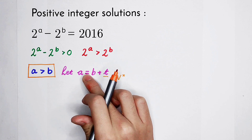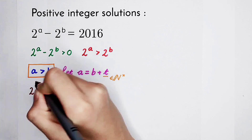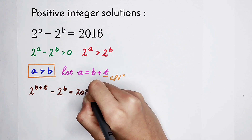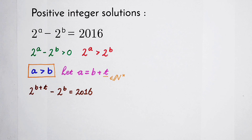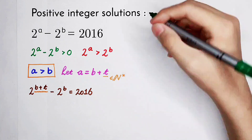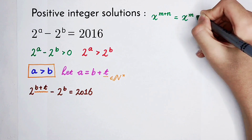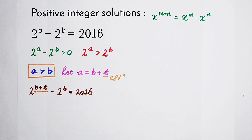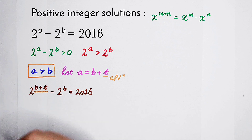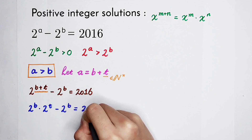We substitute A into the equation. A is now B plus T, so we have 2 to the power of (B plus T) minus 2 to the power of B equals 2016. Using the formula x to the power of M plus N equals x to the power of M times x to the power of N — where x is 2, M is B, and N is T — this becomes 2 to the power of B times 2 to the power of T, minus 2 to the power of B, equals 2016.